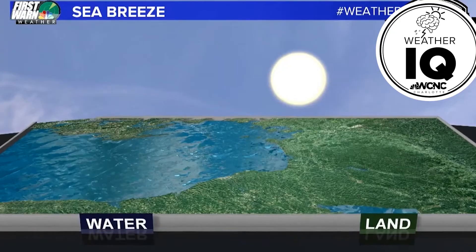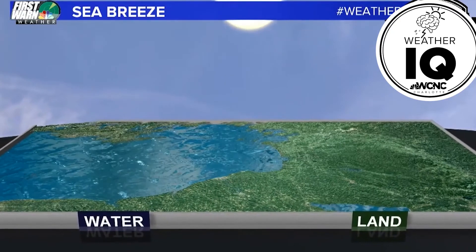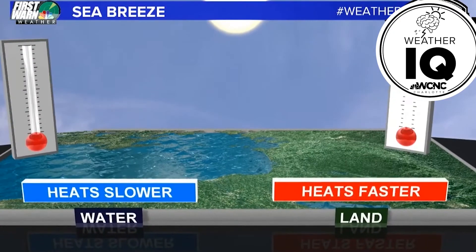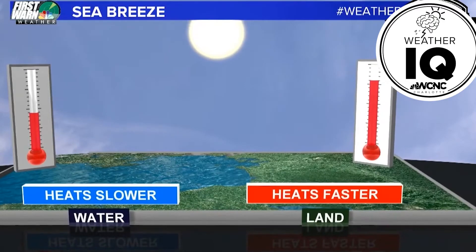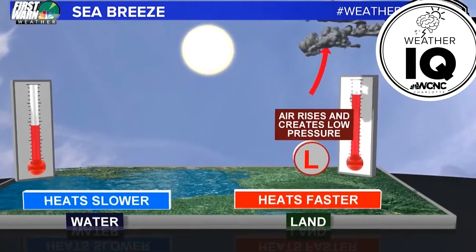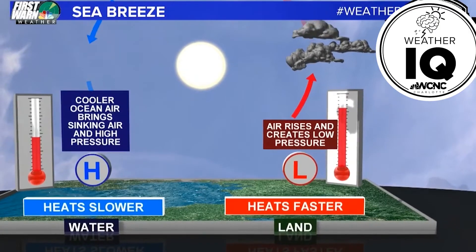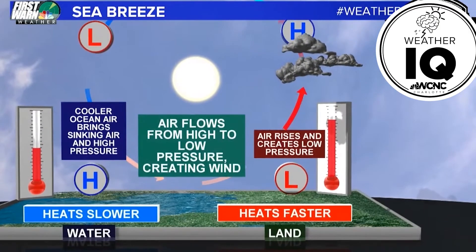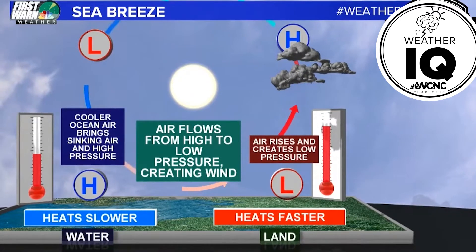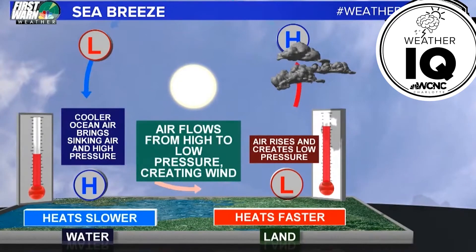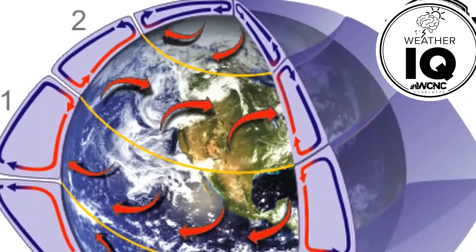Thinking bigger, there's another convection current that happens along our shorelines — it's called a sea breeze. The warm sun warms up the air, it rises (that's the convection), moves toward the cooler air over the ocean or a lake, cools, descends, and moves back toward the warmer air. It's a constant current, and it can even form rain showers and thunderstorms right along the coast. On a global scale, convection currents create trade winds and global winds that steer ships and even hurricanes.